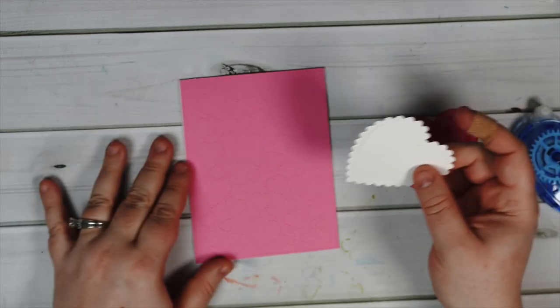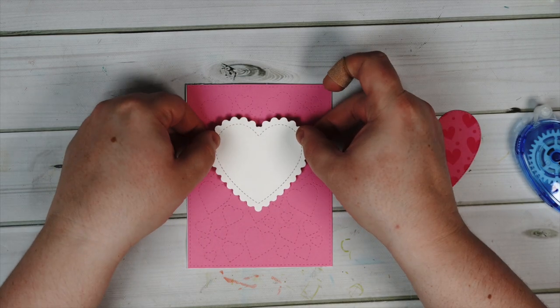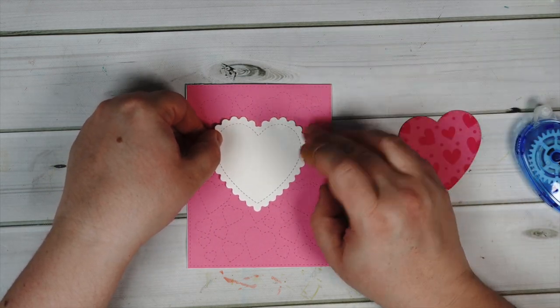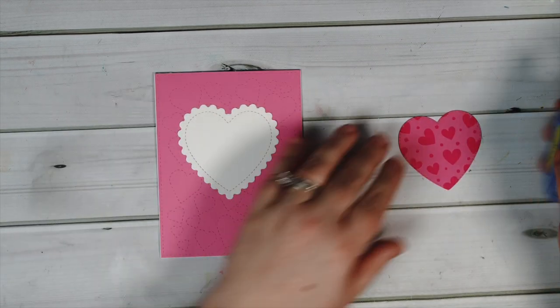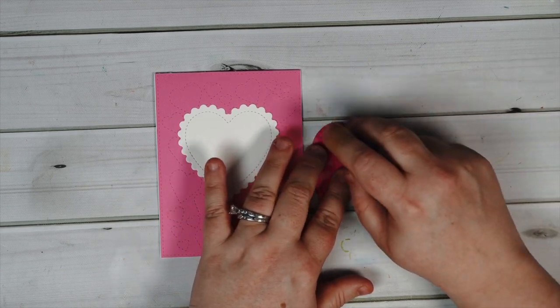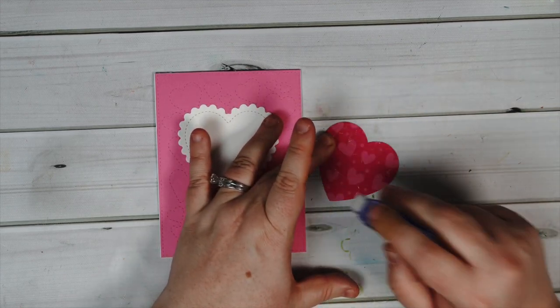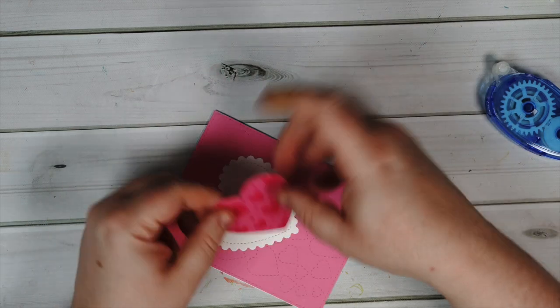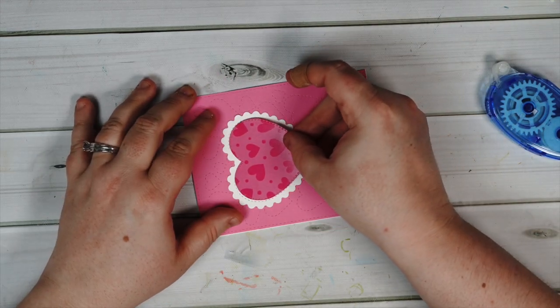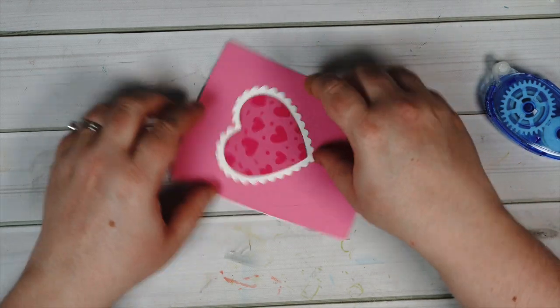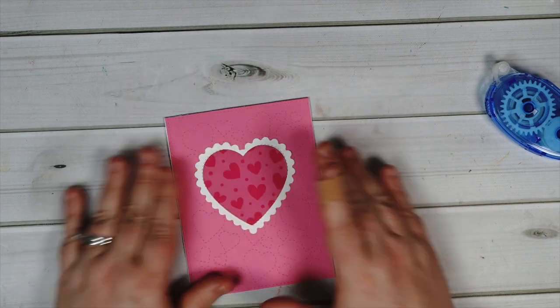Next I went in with that scalloped heart and I wanted to make sure I tried to get it as perfectly as I could in the center of the design. I layered it with that pretty heart paper and these two shades of pink with the hearts floating around is also just so pretty and perfect for Valentine's Day.